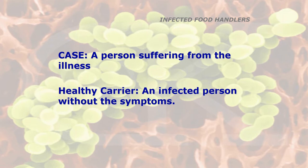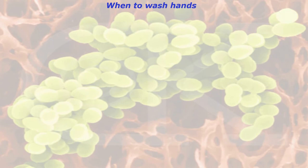There's probably going to be a question on what is a healthy carrier. A case of food poisoning is a person suffering from the illness. A healthy carrier is an infected person without the symptoms — they are carrying the food poisoning bacteria but not showing any symptoms, probably because they have some immunity to it, but they can still pass the infection on to other people via food.